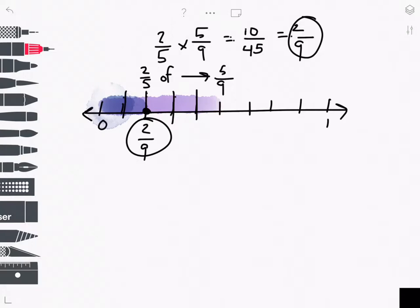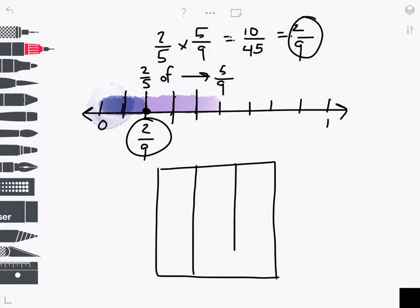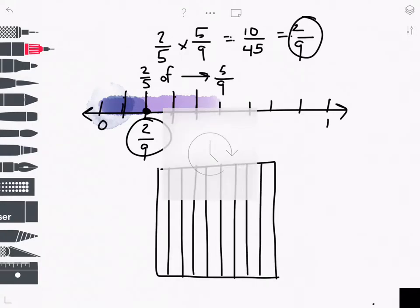I can also model this problem using an area model representation. Let's start with a rectangle. I'm going to start by making 5/9. So I've got to divide my rectangle into ninths. I'll start by making thirds, and then segment each third into thirds to create ninths.